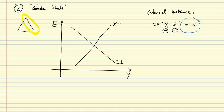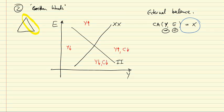This gives us four zones. Above and to the right of the internal balance curve, spending is too high — overemployment and booming domestic conditions. Below it, we have underemployment and domestic unemployment. To the right of the external balance curve, at a given exchange rate and higher income, we have current account deficits. Above the external balance curve, we have a current account surplus. These are zones of discomfort, and if we are anywhere out of equilibrium, authorities must try to rectify the situation.